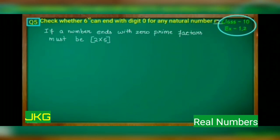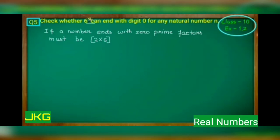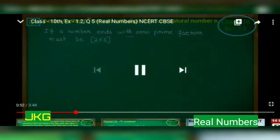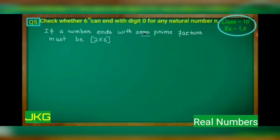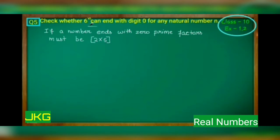Question number 5 says: check whether 6 raised to the power n can end with digit 0 for any natural number n. For any power of 6, the unit digit of 6^n should be 0. For example, 6^3 = 6×6×6 = 216, which ends with 6, not 0. For a number to end with 0, its prime factors must include 2 into 5, because 2×5 makes 10.